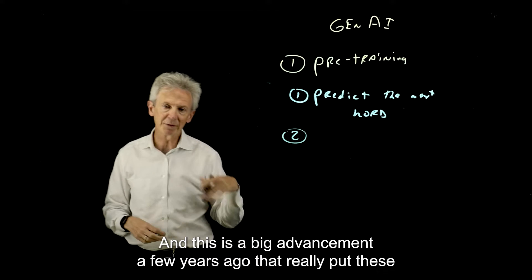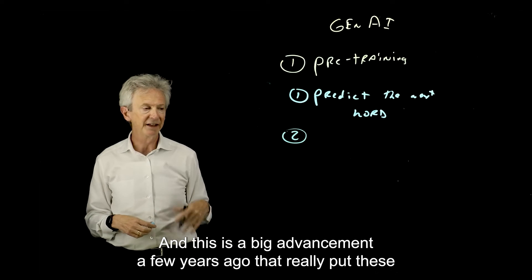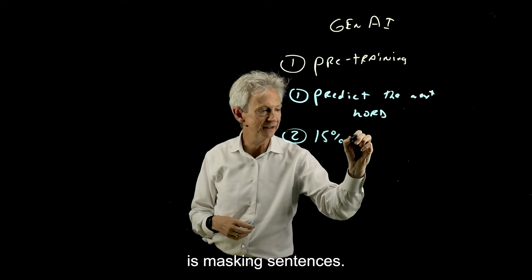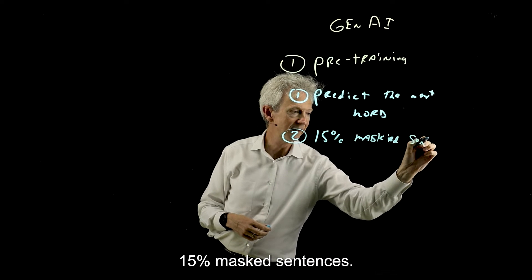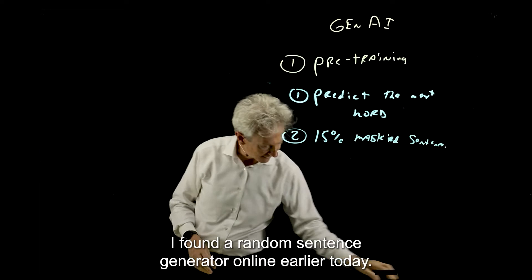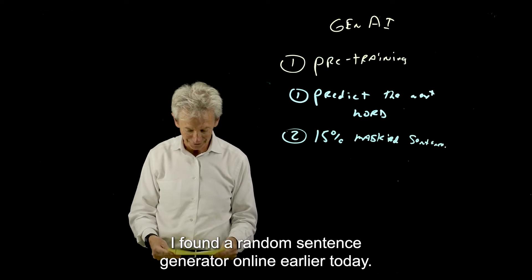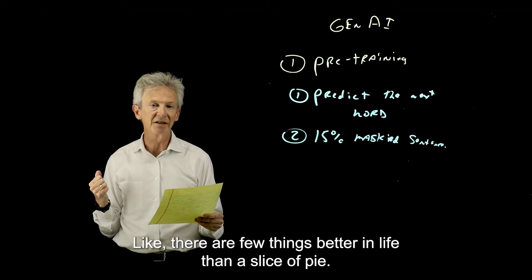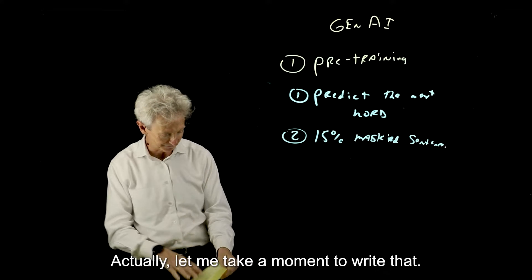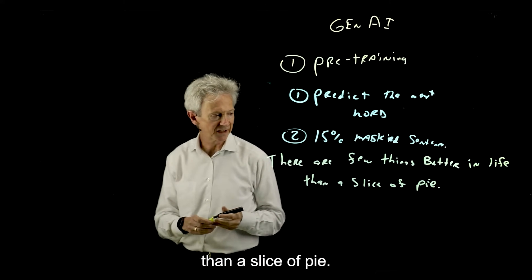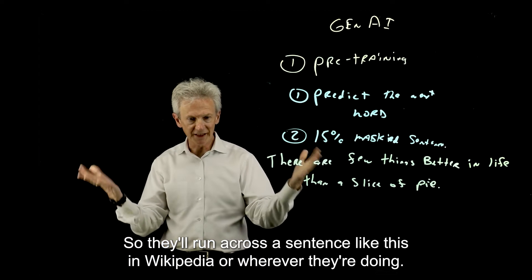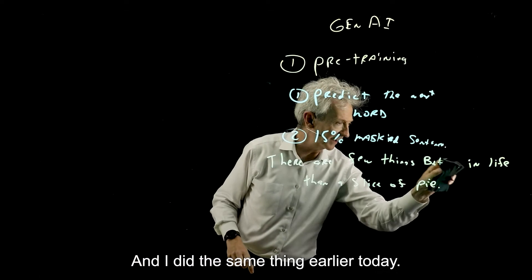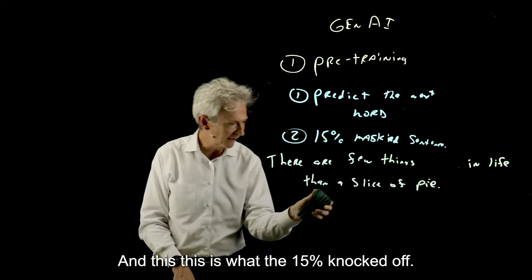The second one, this was a big advancement a few years ago that really put these large language models on the map in terms of their performance, is masking sentences - 15% masked sentences. They'll take a sentence. I found a random sentence generator online earlier today. Here's a sentence like, 'There are few things better in life than a slice of pie.' They'll run across a sentence like this in Wikipedia or wherever. They'll randomly select 15% of that sentence, and I did the same thing earlier today. This is what the 15% knocked off.